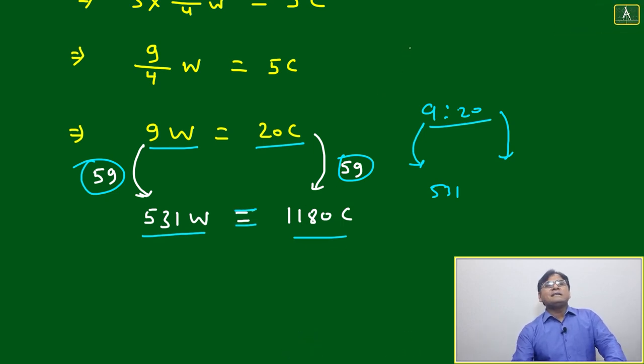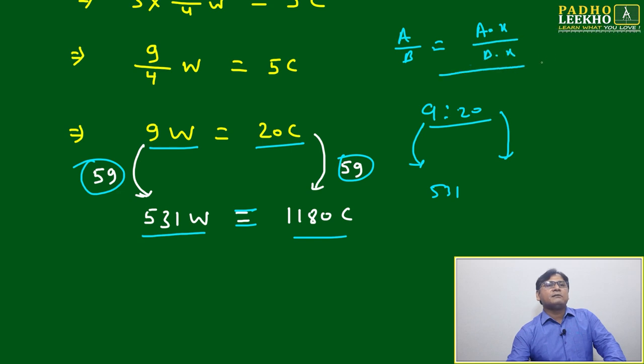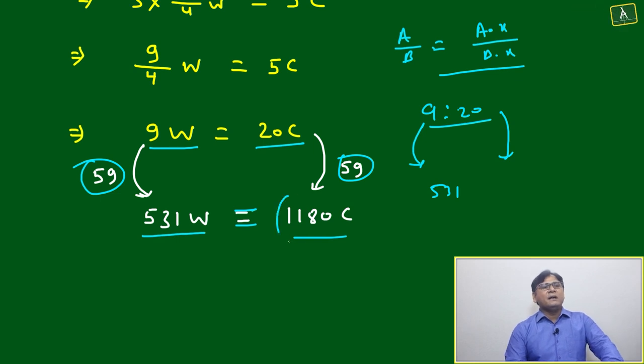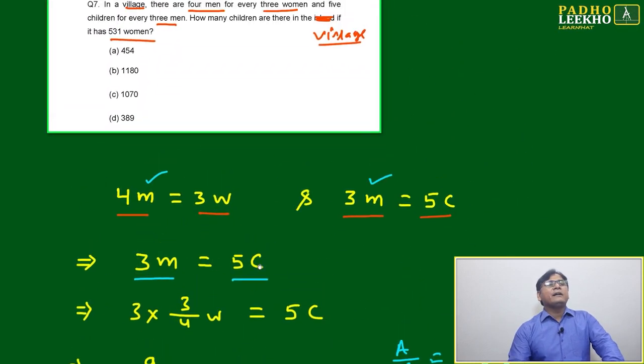We have to multiply by the same factor multiplication. We know the ratio a by b will be equal if you are multiplying with the same number a into x divided by b into x. Then here we have multiplied 59, so this also we have to multiply 59 to keep the ratio the same, then 1180 children will be available for 531 women.